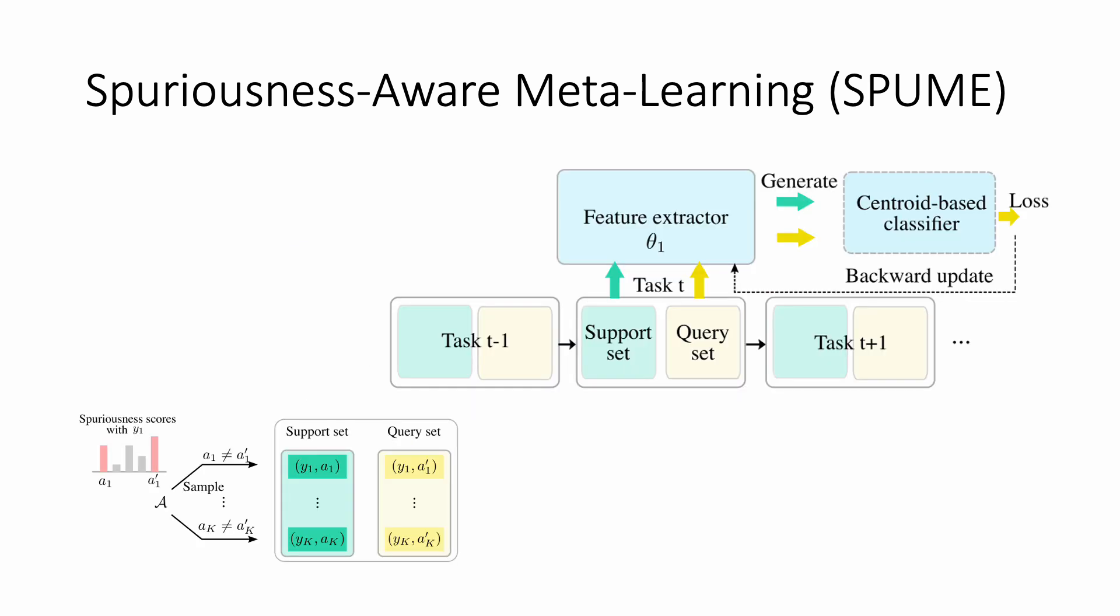With multiple detected attributes, we can formulate various spurious correlations. To train a model that is robust to various spurious correlations, we train the model using meta-learning tasks that simulate various spurious correlations.